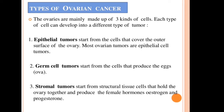Regarding types of ovarian cancer: the ovaries are mainly made up of three kinds of cells, and each type of cell can develop into a different type of tumor. The first type is epithelial tumors, which start from cells that cover the outer surface of the ovaries. Most ovarian tumors are epithelial cell tumors.